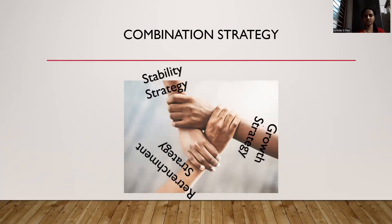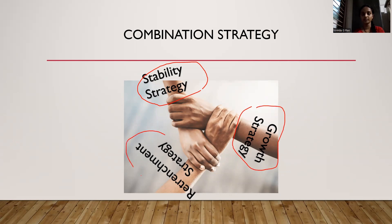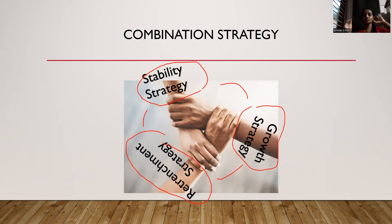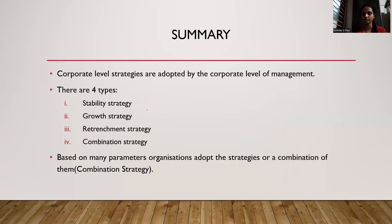The final type of corporate level strategy is combination strategy. Combination strategy is not something new — it is when stability strategy, growth strategy, and retrenchment strategy are all combined together. Usually every business follows a combination strategy: they want to stabilize in some activities, grow in some product lines, and retrench from some industries. This is basically a mixture because businesses are very large and the environment is diverse and complicated. Many large businesses have various product lines, so for one product line they would have one strategy, and for another product line they would have a different strategy.